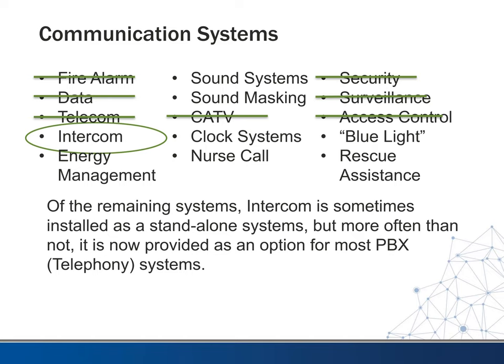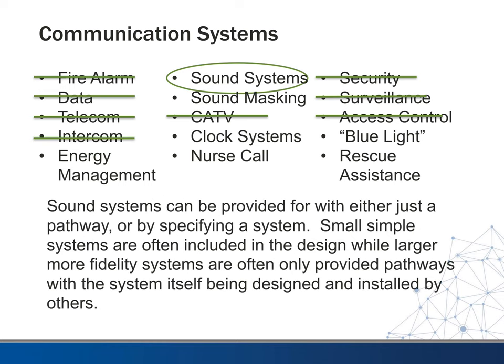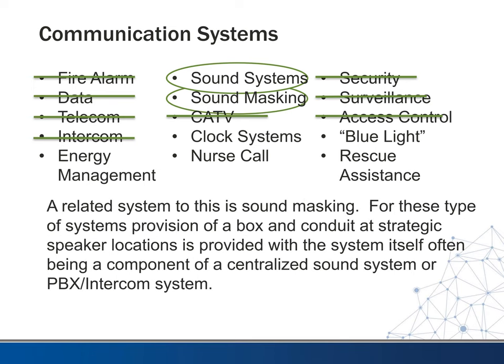Another system we haven't talked about yet is the intercom. This is more often being integrated with the PBX or the telephony system, and many times it's just done through the handset. Other systems include sound systems, which again require pathways back to an amplifier location with conduit run back to that. Many times integrated with sound systems is sound masking, and that can be integrated into one single system to do both things.